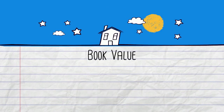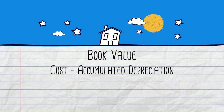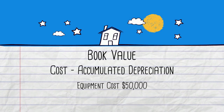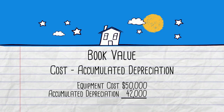This also lets us keep up with something called book value. Book value is the difference between the asset's cost and its balance in accumulated depreciation — or cost minus accumulated depreciation. This does not have anything to do with the asset's value, though. If a piece of equipment cost fifty thousand dollars and the balance in the accumulated depreciation account is forty-two thousand dollars, the book value is eight thousand dollars.